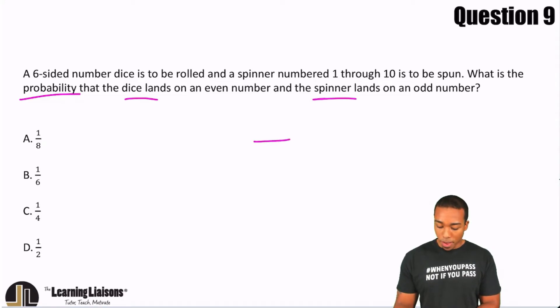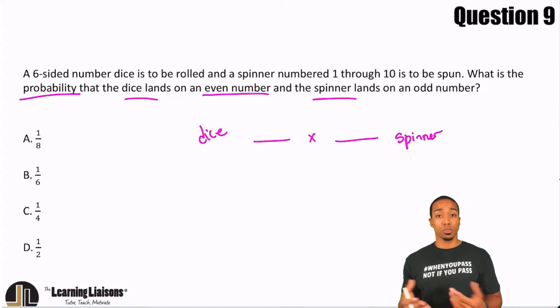I'm going to find the probability for the dice, multiply it with the probability for the spinner. So what's the probability for the dice? Well, I see here that we want the dice to land on an even number, and it's six-sided, so 1 through 6.